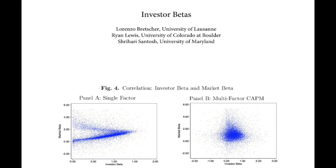I do a bunch of in-class trading exercises, experimental stuff, and it turns out that holds up pretty well experimentally in class. Then we move on and say, let's think about an equilibrium framework. What emerges is the CAPM model, where the portfolio people choose to hold is the market portfolio, and covariance risk with the market is what matters for pricing assets. This also works extremely well experimentally in class, as long as you have the assumptions of the CAPM.